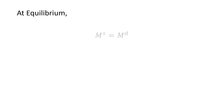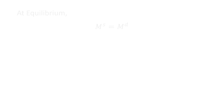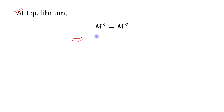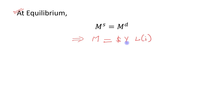At equilibrium, money supply equals money demand. We know that money supply is M. And what is money demand? If you have seen my last video, you will know that money demand is written as dollar Y times L of I, where Y is the nominal income, and this is a function of the interest rate.